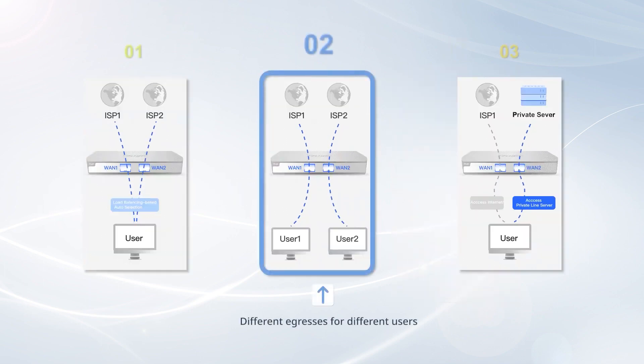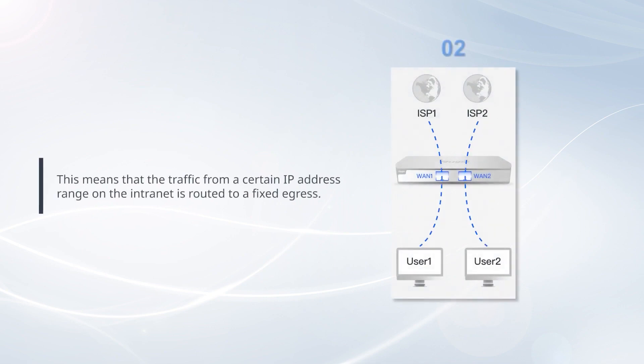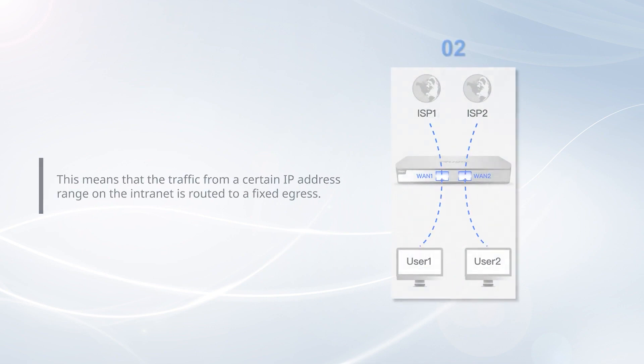Scenario 2: Different egresses for different users. This means that the traffic from a certain IP address range on the internet is routed to a fixed egress.